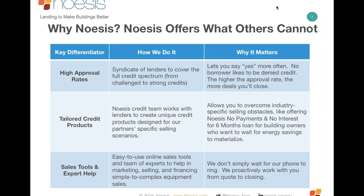Our tailored products allow you to overcome specific sales obstacles. For example, we can offer six months no payments and no interest — overcoming 'I can't put you in the budget until next year.' We've even built a whole lending platform for cannabis grow lights. We have a full range of sales tools, from a simple one-page payment options sheet all the way to a fully-baked third-party investment analysis, and everything in between.